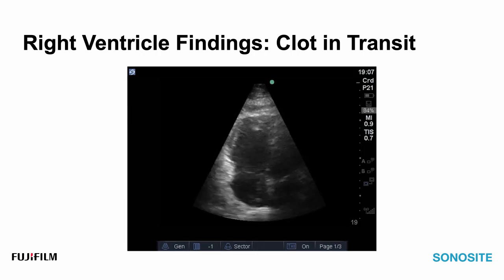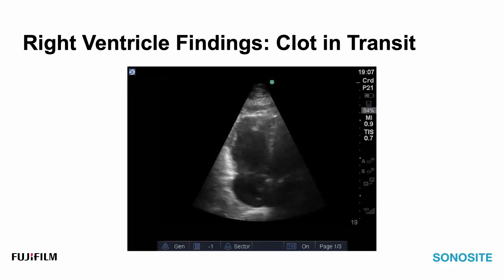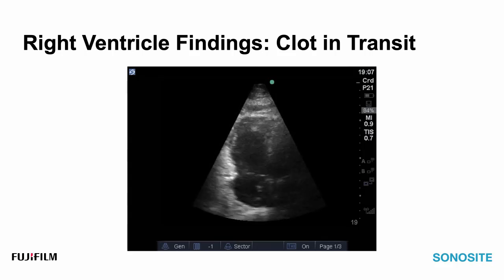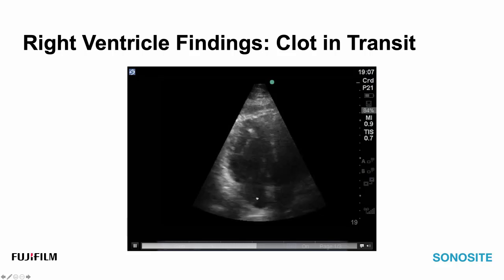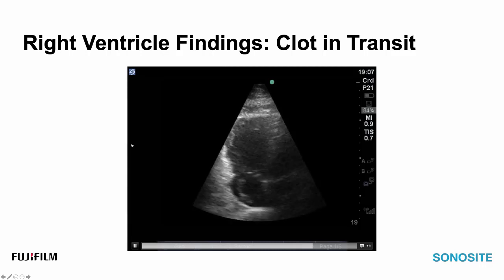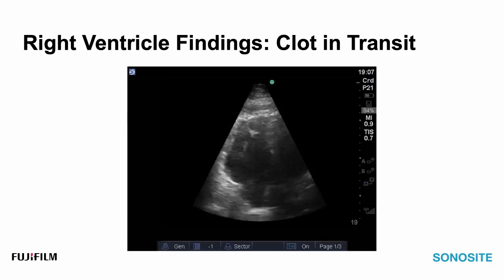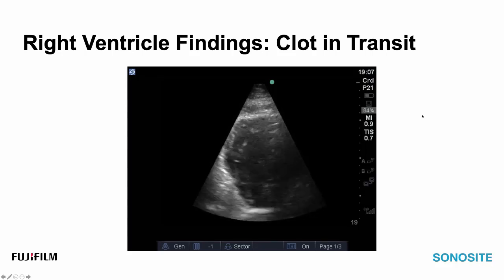An additional finding that colleagues with higher volumes of COVID patients have reported is clots in transit. It's a very satisfying finding when identified because it confirms the pulmonary embolism diagnosis that is often in your mind when you identify an acutely dilated right heart. Attention to the right atrium reveals what appears to be an isoechoic, serpiginous structure flopping around; while there is a differential for that structure, a clot in transit is perfectly reasonable in the appropriate clinical context and may indeed influence your clinical management.